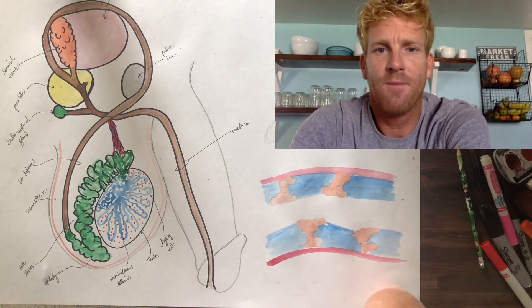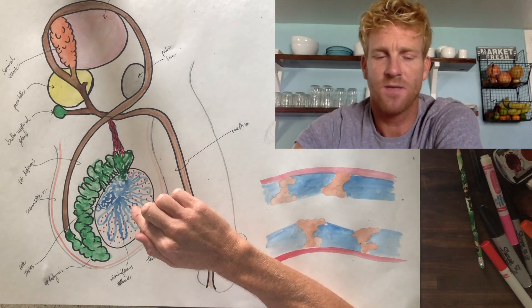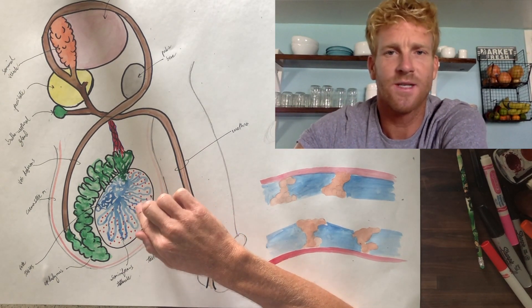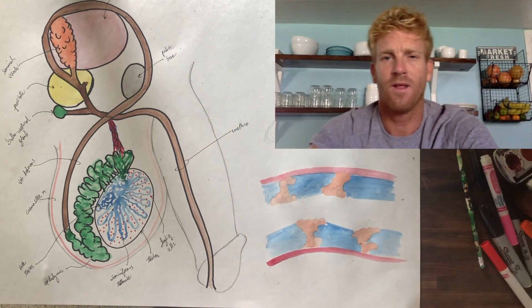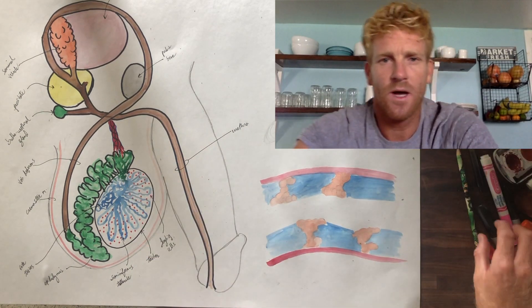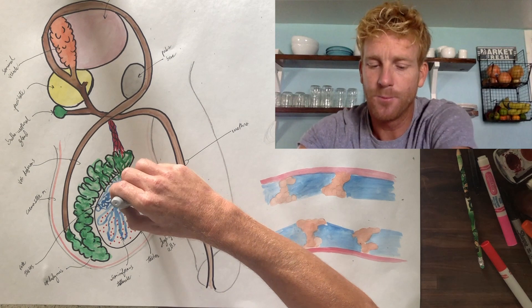Last time we talked, we focused on the testicle, its structure, and the pathway that sperm takes as it leaves the testicle. Now I'm going to talk about what happens inside one of these seminiferous tubules in blue. I'm going to draw the seminiferous tubule over here, zoom in, and cut it lengthwise so we can see what's inside this tube.